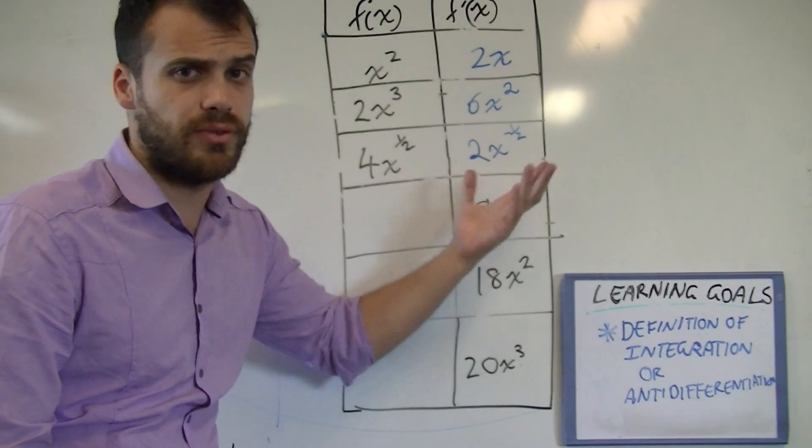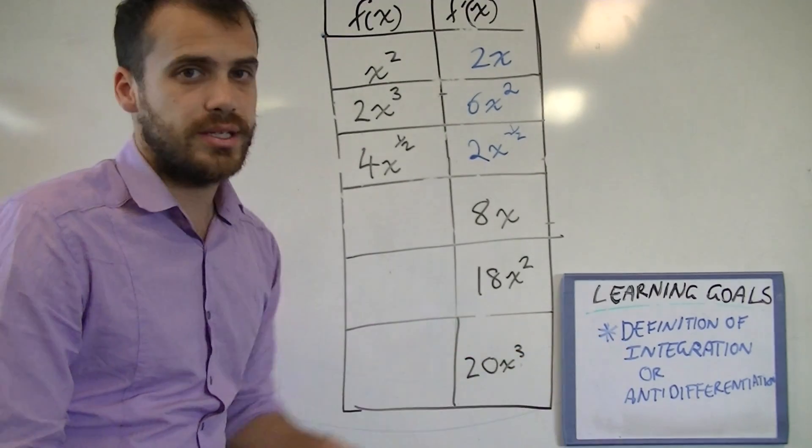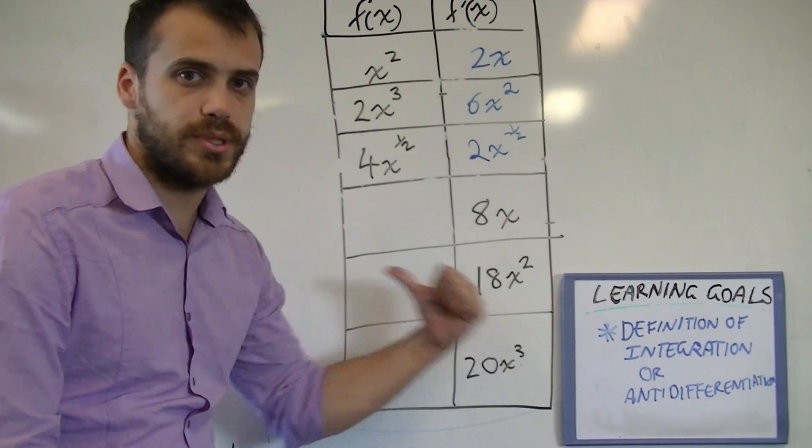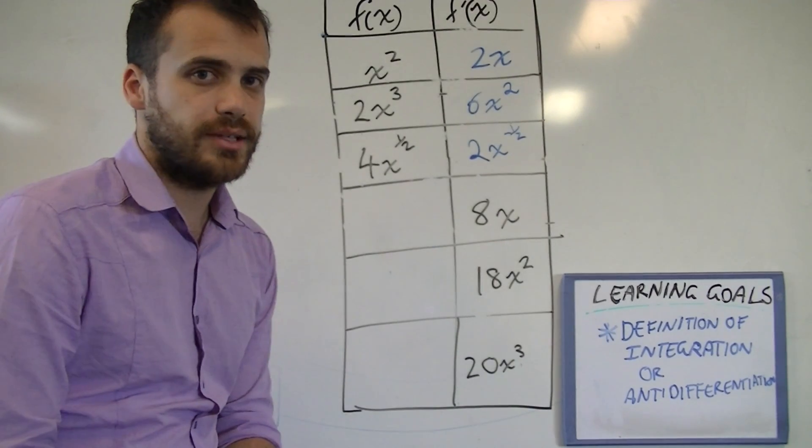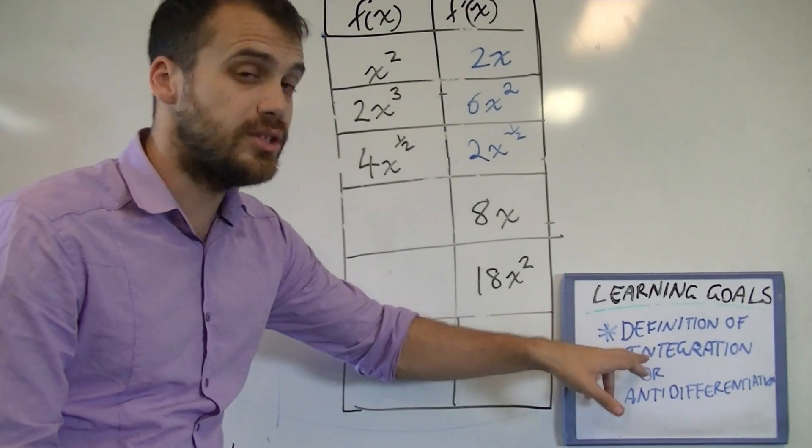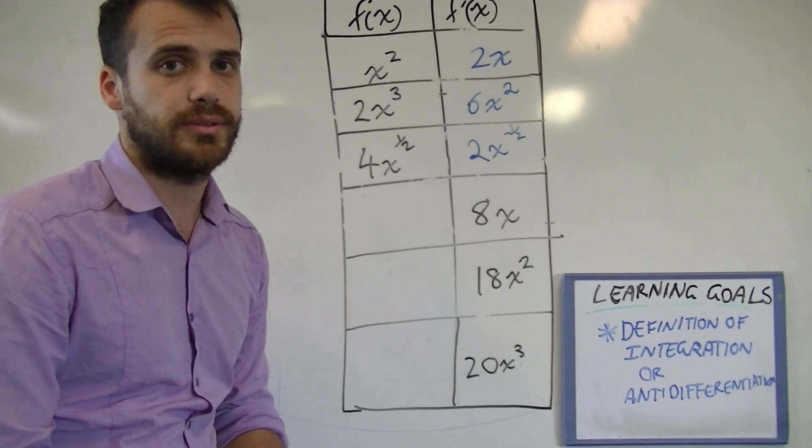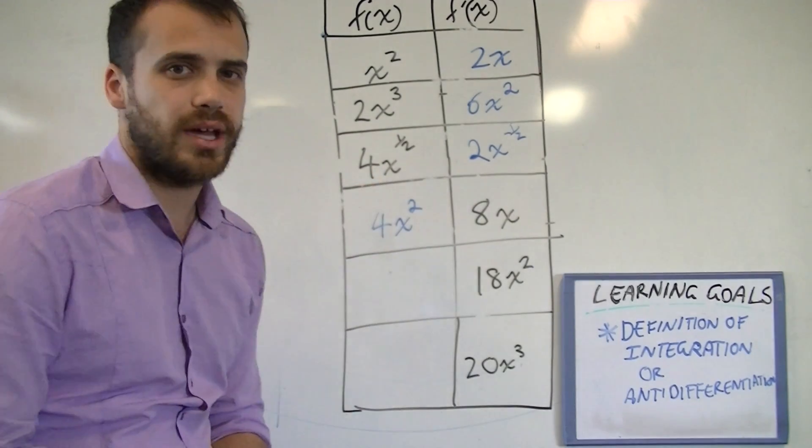That's finding the derivative and that's revision. You should be pretty comfortable with that. Now integration or anti-differentiation is just the opposite. It's going the other way. So have a think about 8x. What would the anti-derivative or what would the integral of 8x be? 4x squared.